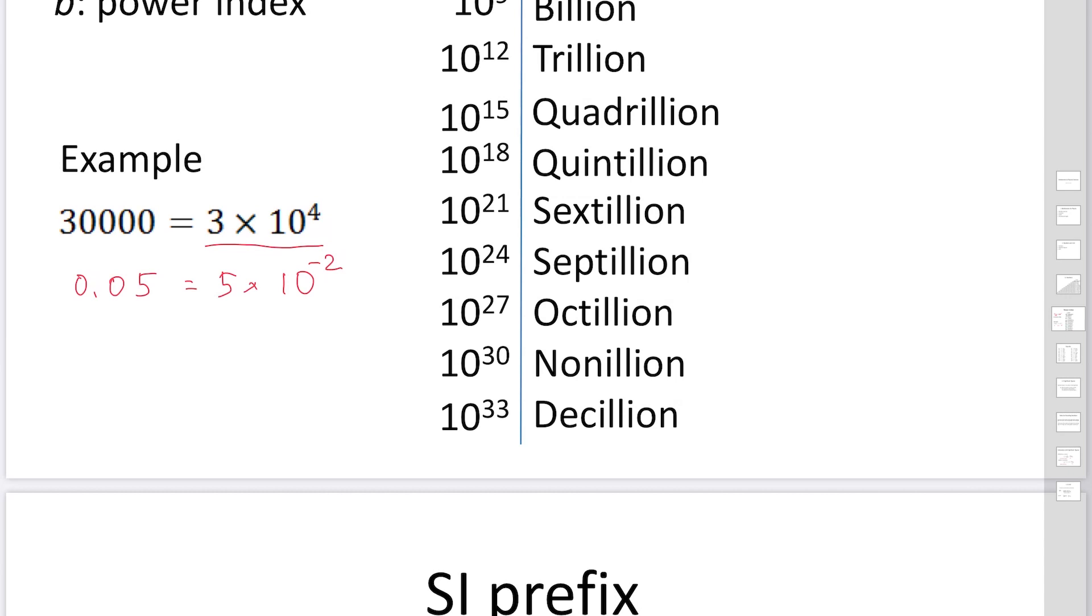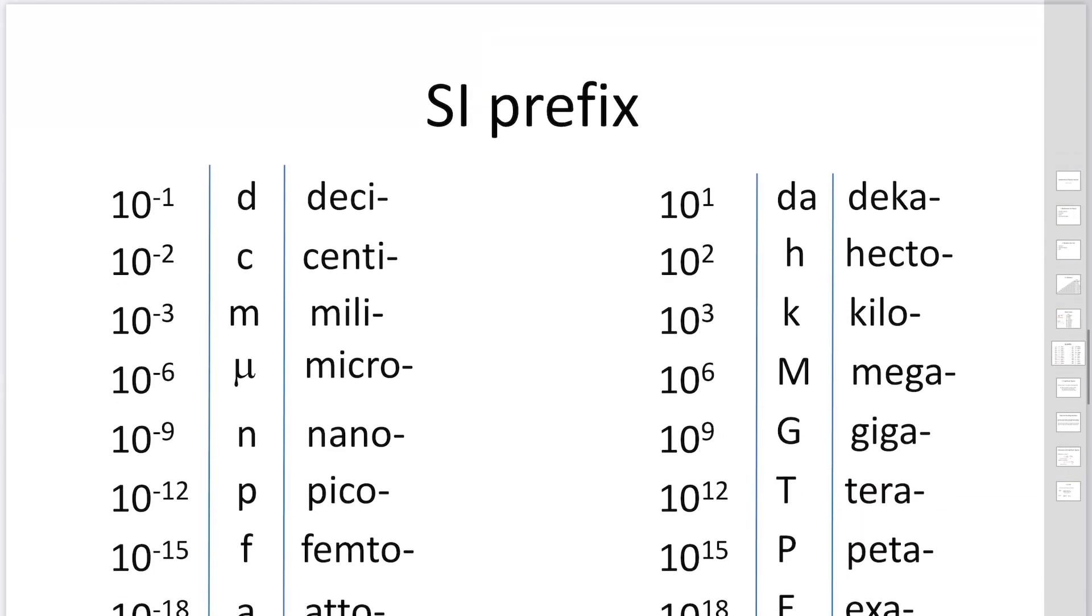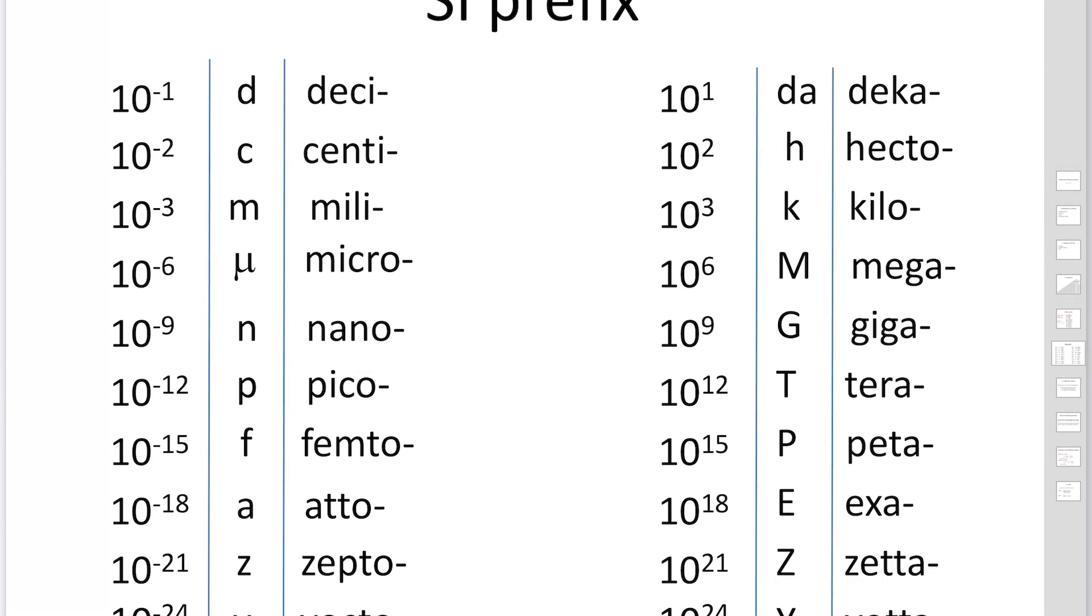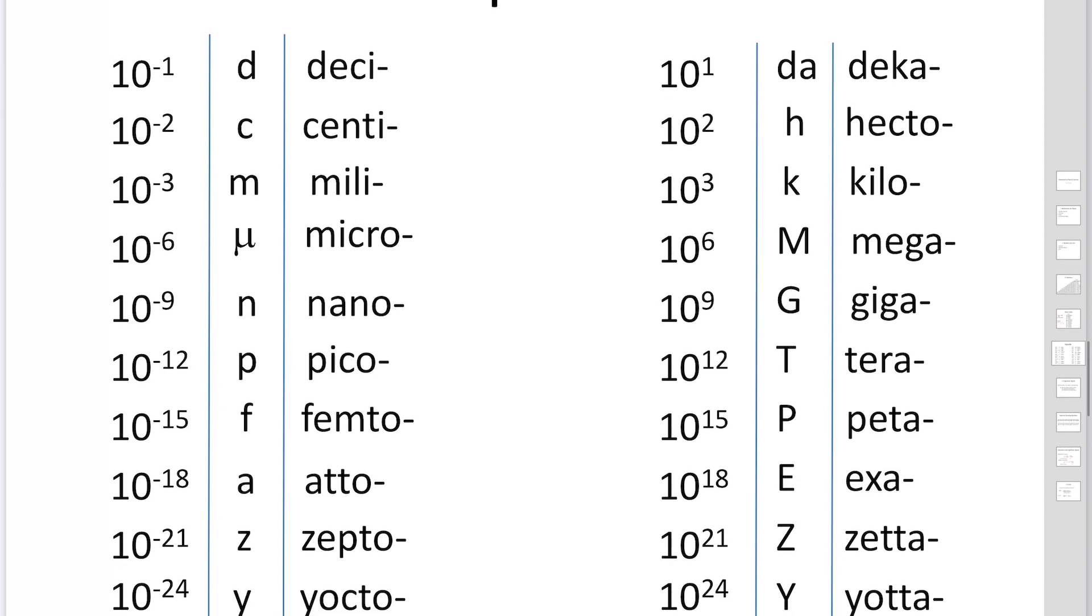Sometimes we use SI prefixes to describe big and small numbers. Deci means 10 to minus 1, centi is 10 to minus 2, milli is 10 to minus 3, micro is 10 to minus 6, nano is 10 to minus 9, pico is 10 to minus 12, femto is 10 to minus 15, atto is 10 to minus 18, zepto is 10 to minus 21, and yocto is 10 to minus 24.